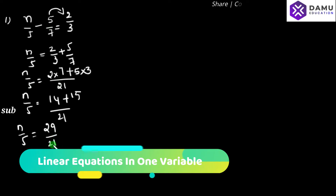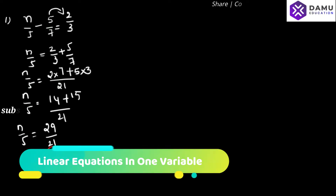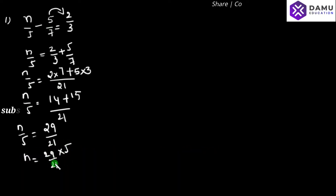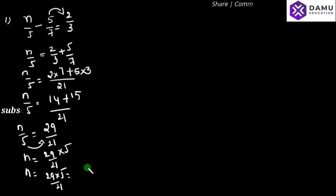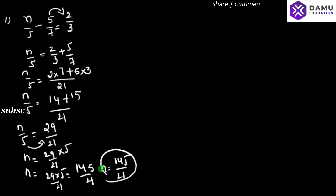Then n will be equal to 29 by 21 into 5. Shifting the division to the right side means it will come as multiplication. So n will be equal to 29 into 5 by 21, which gives 145 by 21. So finally n equals 145 by 21. That is the n value.